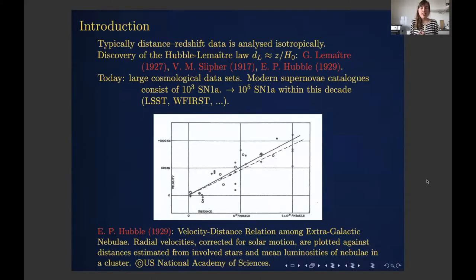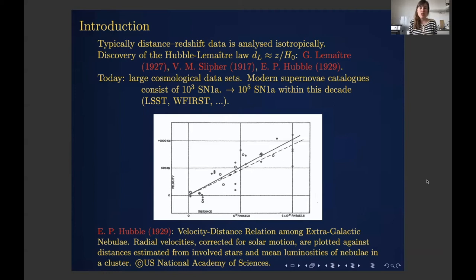Typically in cosmology we analyze data in an isotropic manner, and isotropic model assumptions and isotropic data analysis strategies go back to the very foundation of general relativistic cosmology. For instance, the first estimate of the Hubble parameter made by Hubble himself was based on an isotropic analysis where Hubble plotted distances against redshift of the sources of his survey, independent of the direction on the sky.